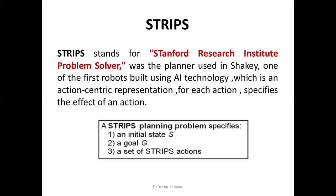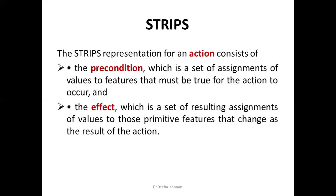To implement this block problem we use the STRIPS language — Stanford Research Institution Problem Solver. It was the first programming language used in the first robot built using AI technology. STRIPS has a specification for initial state, goal state, and a set of actions represented using preconditions and after-effects. It is a simple language that uses first-order logic representations.